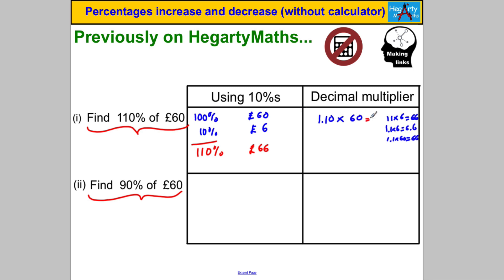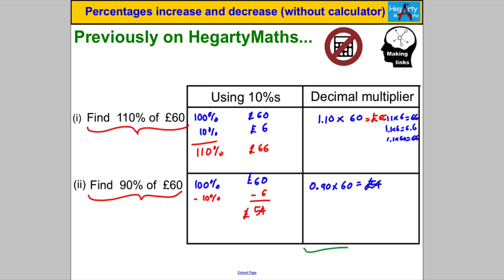Alternatively, to find 90% of £60: 100% is £60, and this time we subtract 10%, i.e. subtract £6, giving £54. Using the decimal multiplier: 90% as a decimal is 0.90, multiply by 60, which also gives £54. It's up to you which method you prefer, though later we'll be using decimal multipliers when a calculator is allowed, while the 10% method may be slightly easier without one.